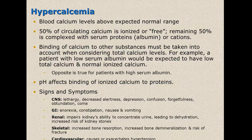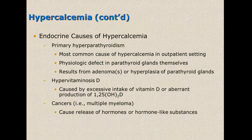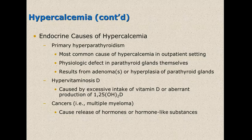Signs and symptoms of hypercalcemia can include central nervous system issues, GI issues, renal issues, skeletal problems, or cardiovascular issues — a whole myriad of symptoms. Endocrine causes of hypercalcemia include primary hyperparathyroidism, which is the most common cause in an outpatient setting. There is a physiological defect in the parathyroid glands themselves, usually resulting from some type of adenoma or hyperplasia of the parathyroid glands.